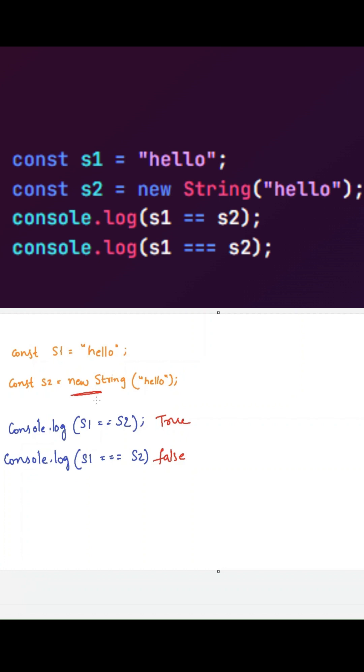So what is this new String constructor? It will create a string object. Instead of creating a string, it will create a string object. This is the most important thing. Now this string object internally holds the value hello string.